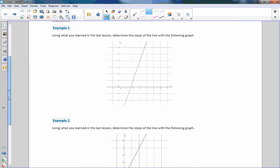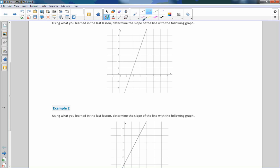The classwork example one says using what you learned in the last lesson, determine the slope of the line with the following graph. So what we learned in the last lesson was find a location on the graph where this line goes through a corner of the grid and that is where there is an integer value.